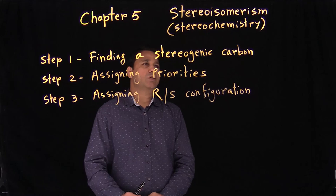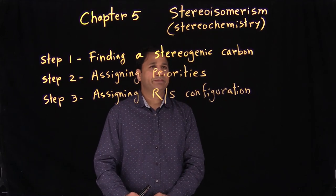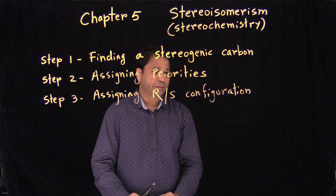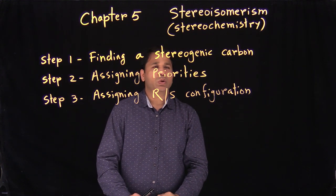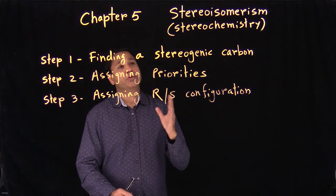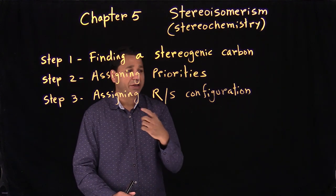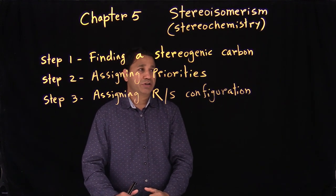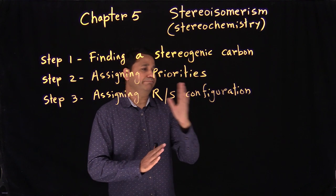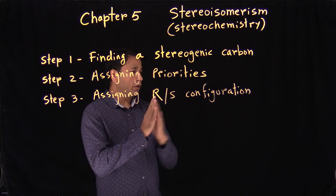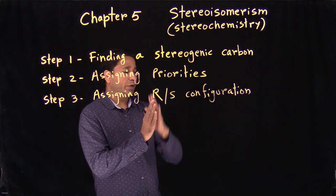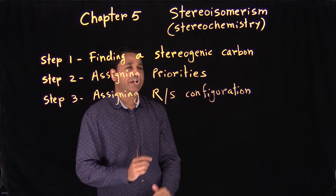Chapter 5: Stereoisomerism, also called stereochemistry. The term 'stereo' means 'in space,' so we're trying to visualize a molecule in three-dimensional space — bonds above the plane, below the plane, or in the plane.